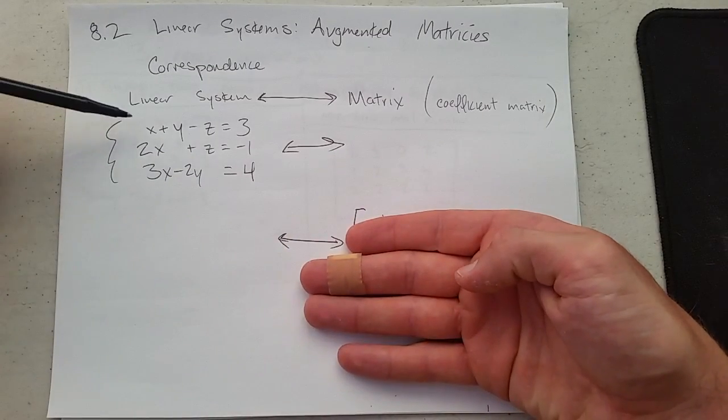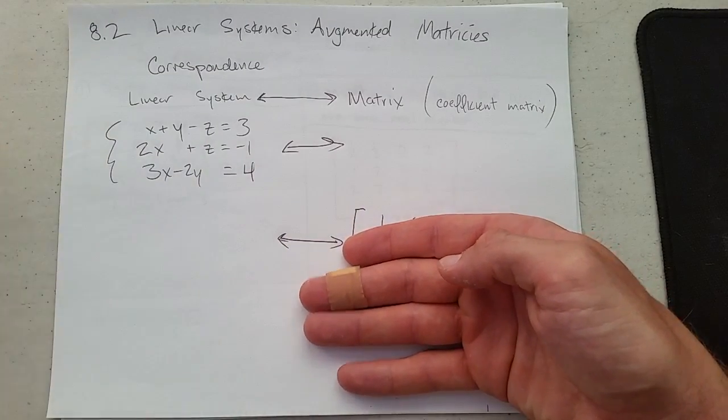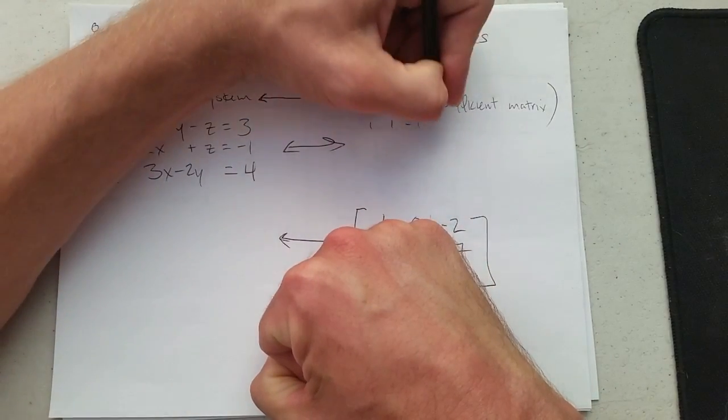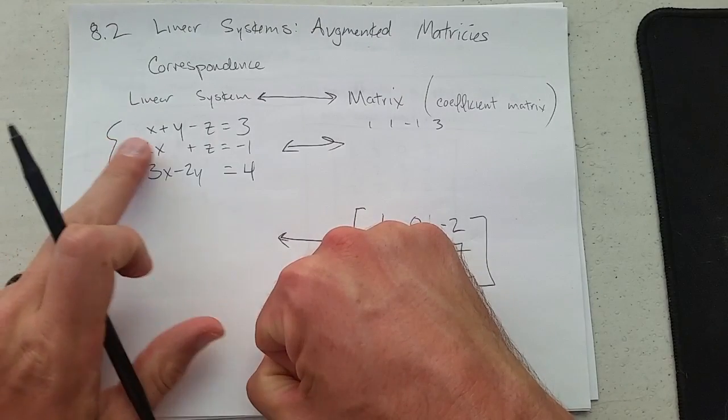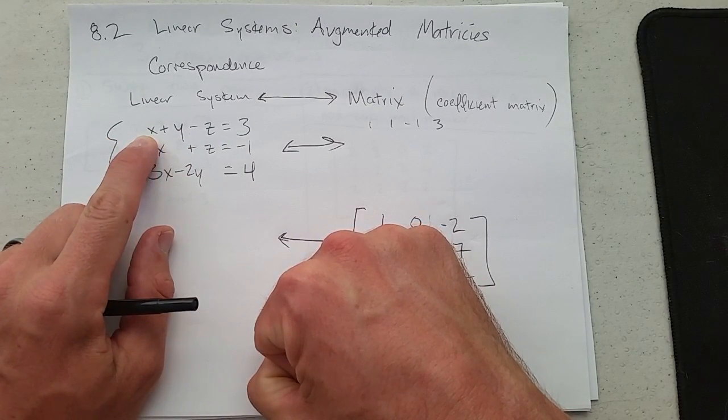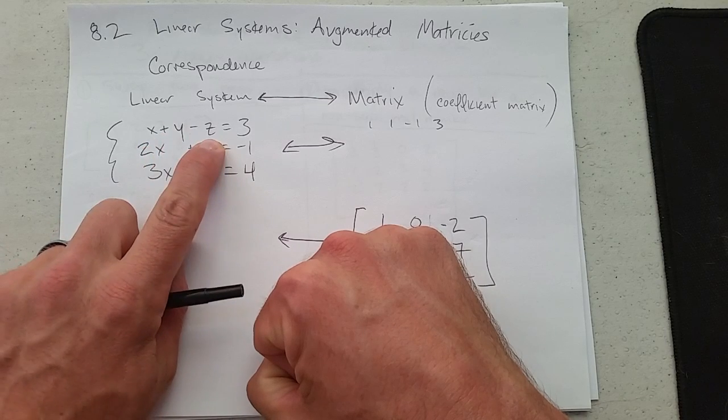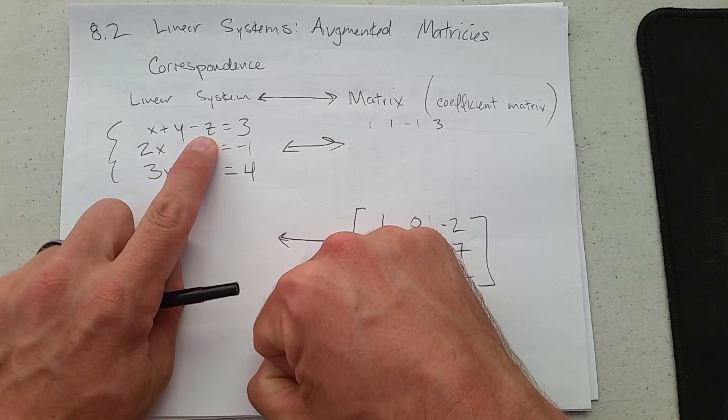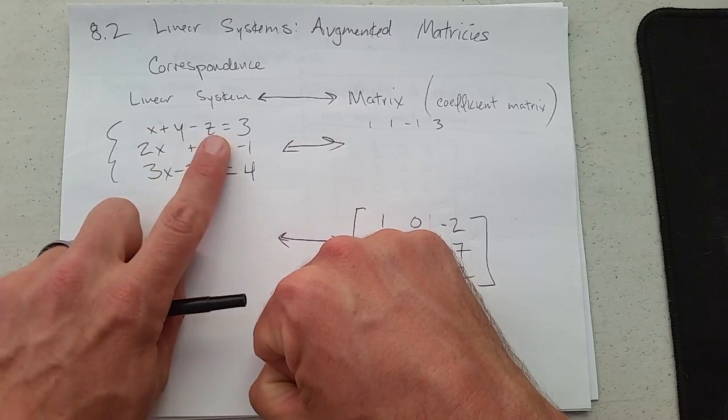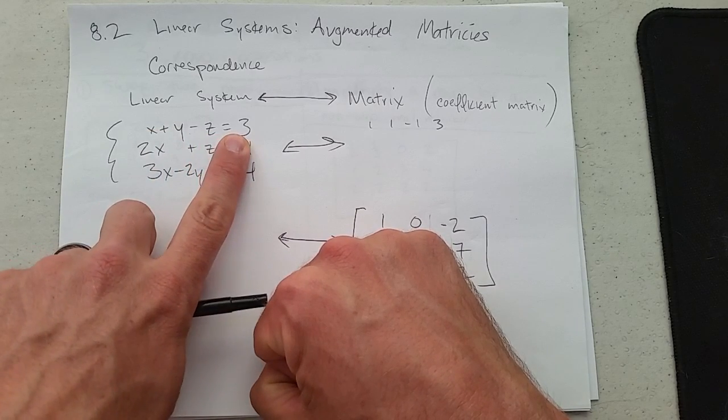We're going to first turn this first linear system into a matrix, and all we do is pick the coefficients right here. Where did I get the ones from? How many x's are here? One. How many y's? One. How many z's? Not one, but negative one. So these are what I call the invisible coefficients that are ones or negative ones, and then of course you got three.